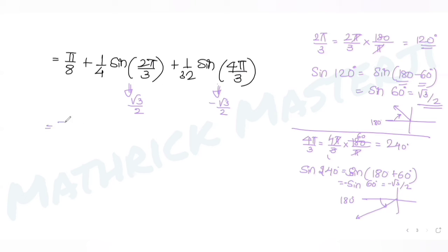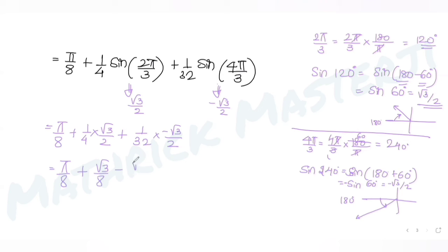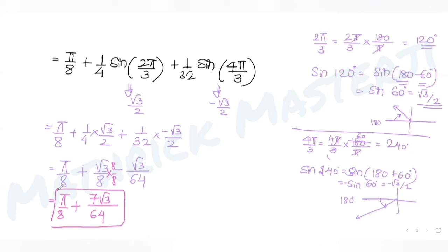Substituting back: π/8 + (1/4)(√3/2) + (1/32)(−√3/2) = π/8 + √3/8 − √3/64. Combining the √3 terms with common denominator 64: (8√3 − √3)/64 = 7√3/64. So the result is π/8 + 7√3/64.